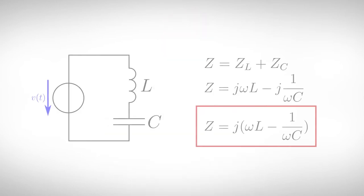After this short revision, let's take a look what happens if we connect both elements to an AC source, either in series or in parallel. Let's start with the series connection. In a series connection, the total impedance is the sum of the individual impedances. Since both elements have an imaginary impedance, the sum of them is also imaginary.